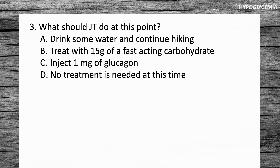Question number three, regarding JT from the previous question who was having a hypoglycemic attack. What should JT do at this point? A, drink some water and continue hiking; B, treat with 15 grams of a fast-acting carbohydrate; C, inject 1 milligram of glucagon; or D, no treatment is needed at this time. Choose your answer.